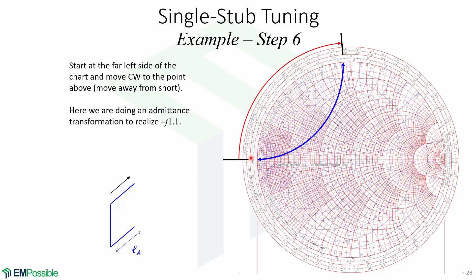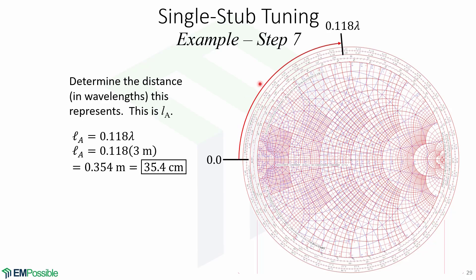Once we have located the circle, we will start at the far left side of the chart and move clockwise to the point located above — this means that we move away from short circuit. By doing this, we are doing an admittance transformation to realize −j1.1, which will give us the length of our single stub. After this, we determine the distance in wavelength that this circle represents. We start at 0.0 and finish at 0.118 wavelengths. In centimeters, this is 35.4. And this is how you realize single stub tuning using Smith charts. Thank you.